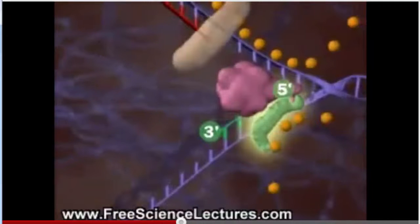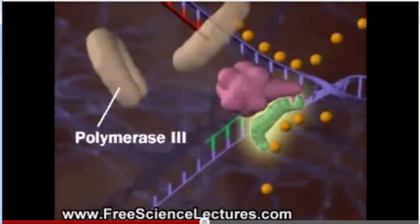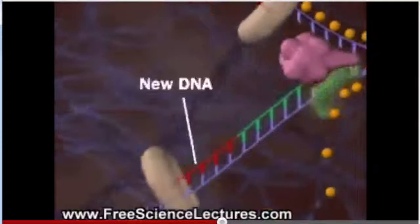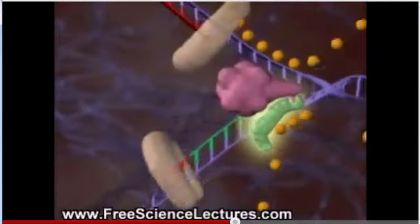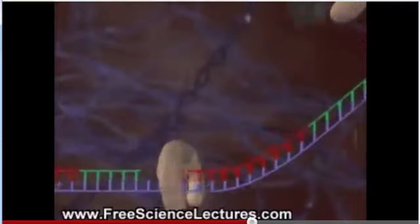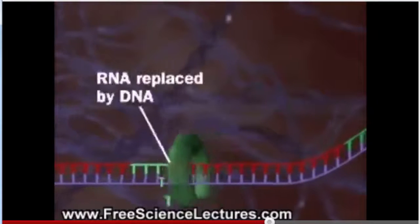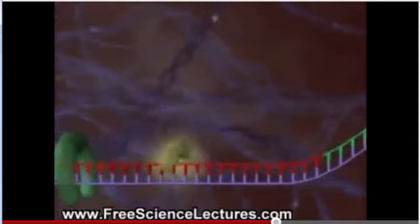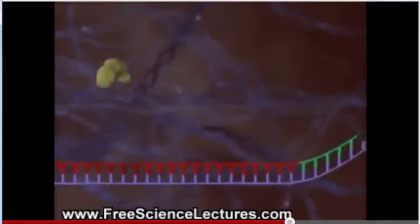First, an RNA primase lays down an RNA primer. Then, DNA polymerase 3 lays down new DNA. The process repeats again and again. DNA polymerase 1 replaces the RNA primers with DNA. Finally, DNA ligase links the Okazaki fragments.